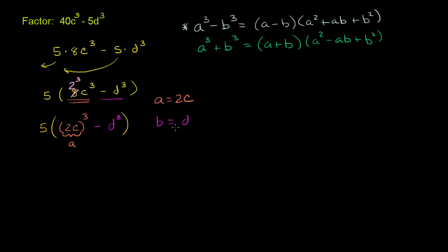We have minus b to the third and minus d to the third. So b and d must be the same thing. So this part inside must factor out to, let me write my five open parentheses. Let me give myself some space. So it's going to factor out into a minus b.